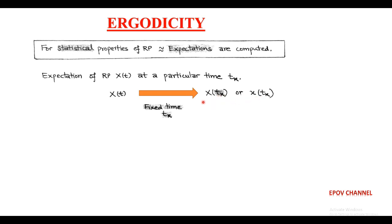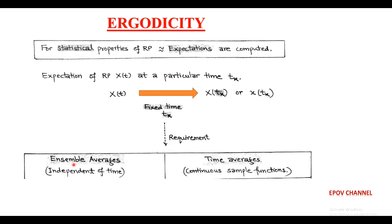To find the statistical properties of a random process, there is a requirement of two averages where the expectation operator is used: these are ensemble averages and time averages. The ensemble averages are independent of time, whereas time averages are continuous sample functions.